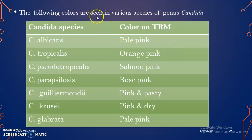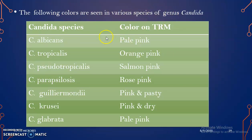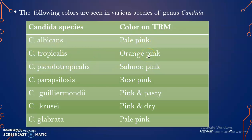The following colors are seen in various species of the genus Candida on tetrazolium reduction medium. For example, Candida albicans produces a pale pink color, and Candida tropicalis produces orange-pink, and so on.